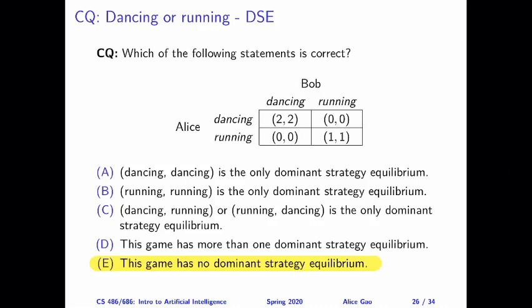Hi, everyone. This is Alice Gale. In the previous video, we looked at our second normal form game, Dancing or Running, and we tried to apply the dominant strategy equilibrium solution concept to the game. But unfortunately, there is no dominant strategy equilibrium.